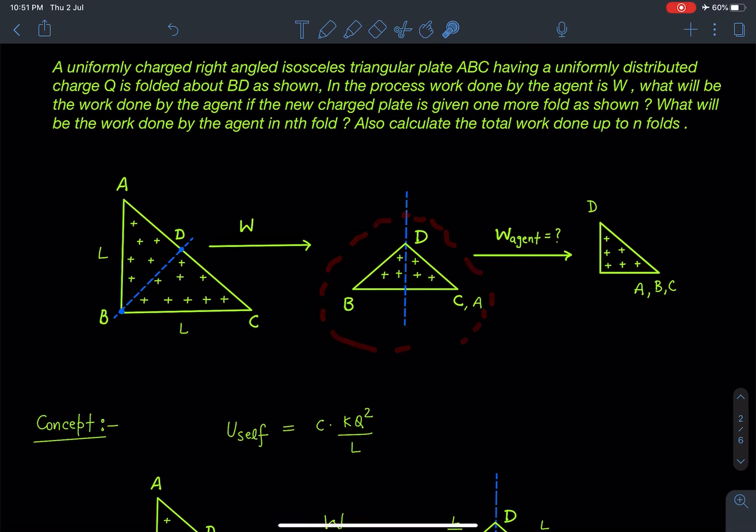Now after folding, this point A and point C are going to coincide. Okay, so next time this folding is happening about this line as shown in this diagram. And after that B, C, and A all these points will be coinciding. In this process, how much work we will be doing as an agent, that we have to find in terms of this work done W given to us.